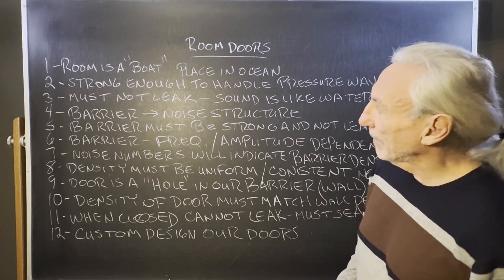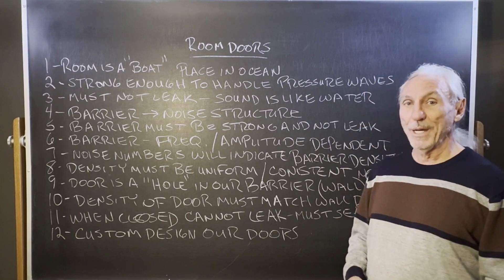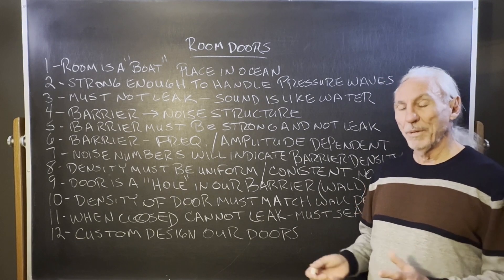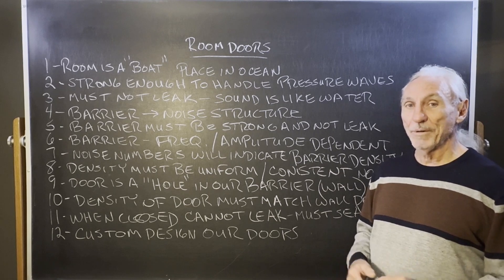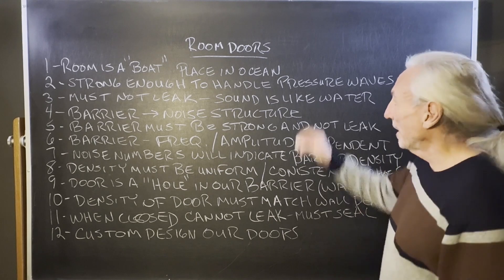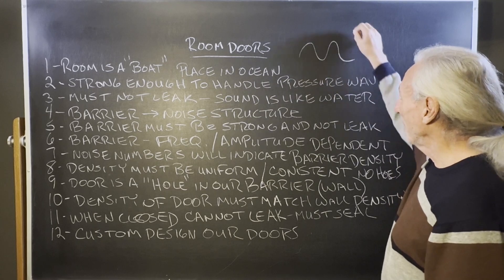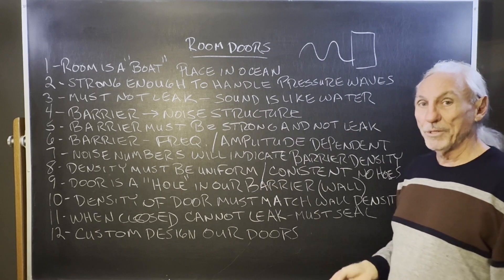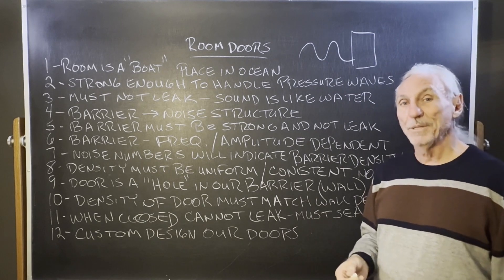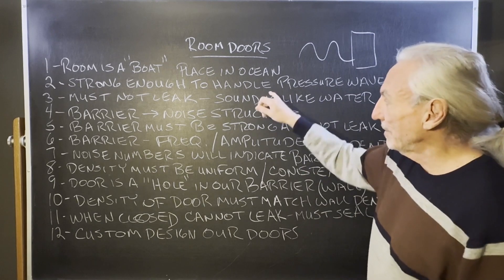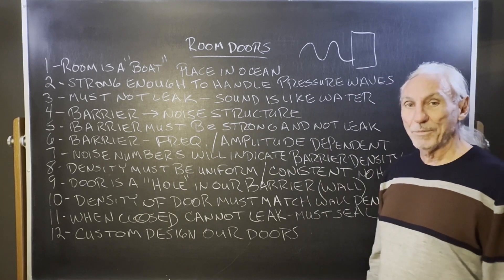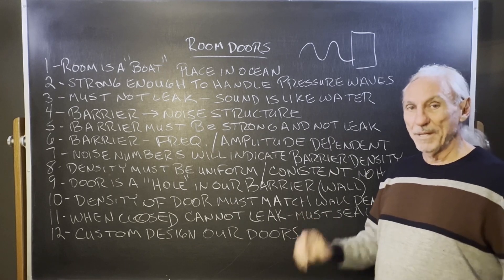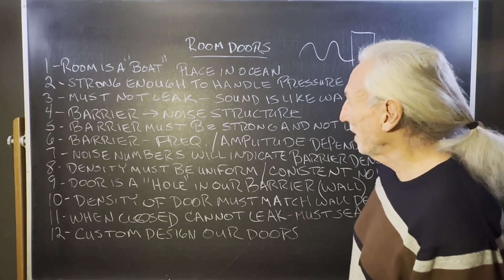A room is like a boat. I like to use this analogy because a boat placed in the ocean has to have two things. One, it's got to be very strong because it's got to take those waves that strike it. We have the same thing in our room — we have pressure waves, not ocean waves, but they're very similar. And secondly, it can't leak. It's got to be tight, with no holes in it.